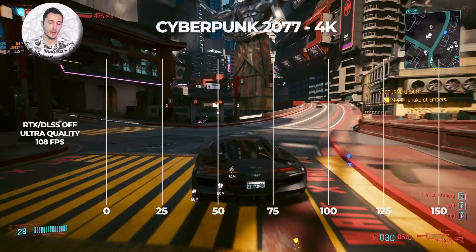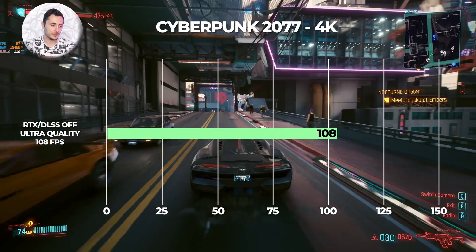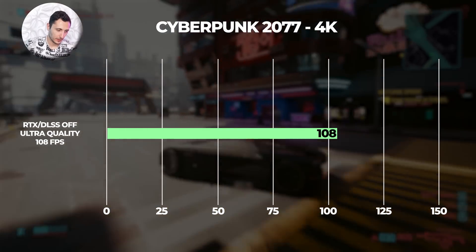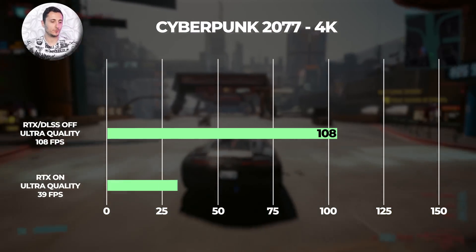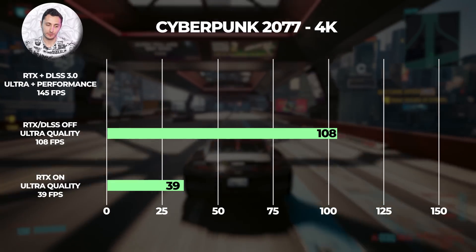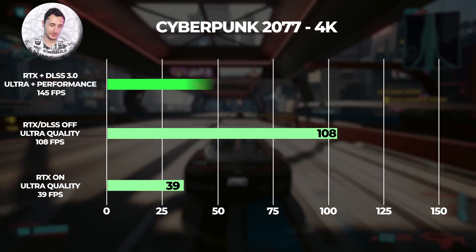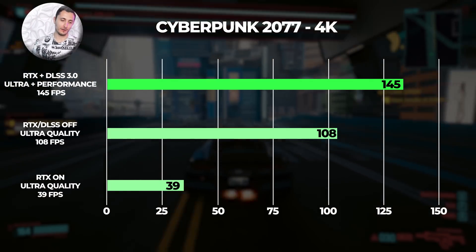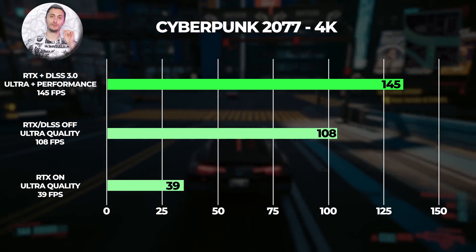The first game we're testing is Cyberpunk 2077, pretty much the staple of all benchmarks when comparing ray tracing with DLSS software. In native 4K ultra settings with RTX and DLSS off, we're getting an average of 108 FPS. Turning on ray tracing at ultra settings, we dipped all the way down to 39 FPS. But with DLSS 3 enabled in performance mode, we got an average of 145 FPS — about a 25 percent gain from native 4K and 73 percent from ray tracing alone.